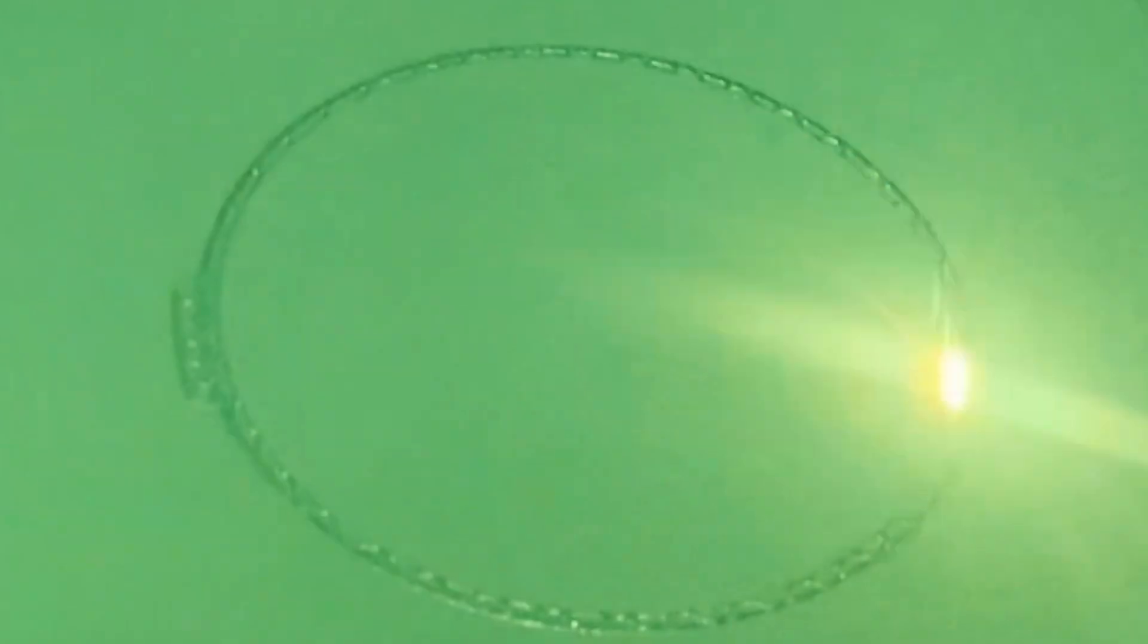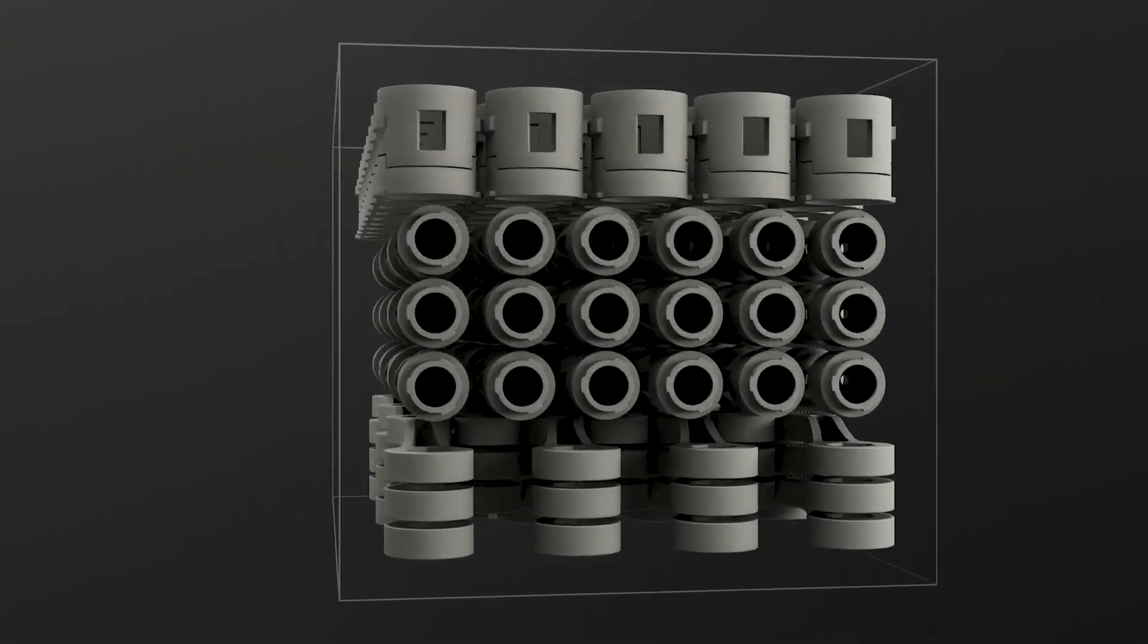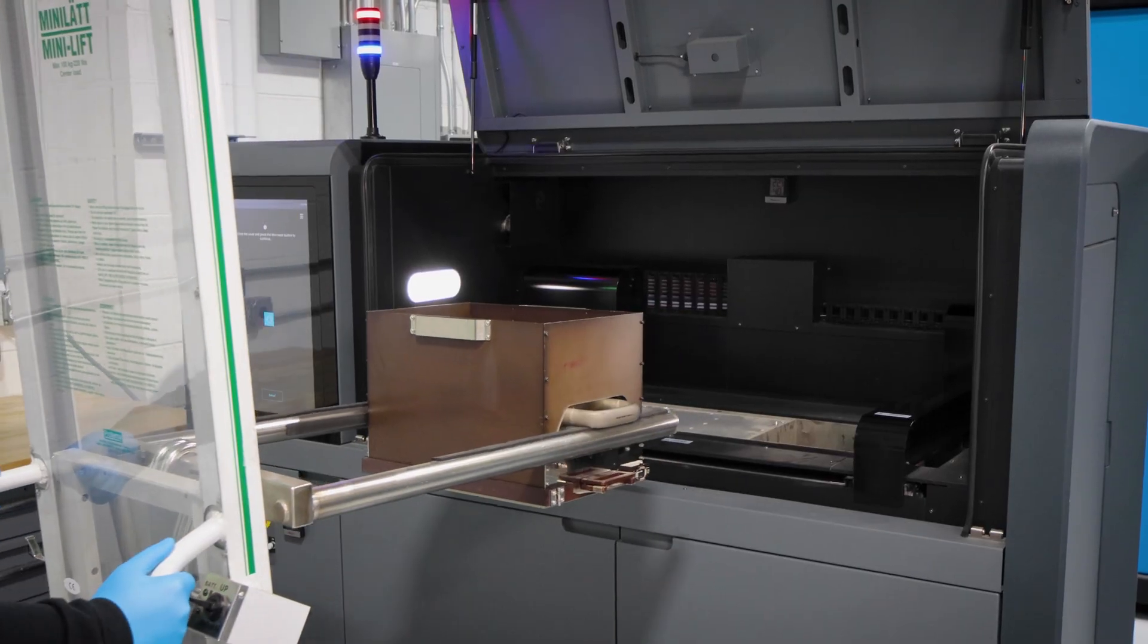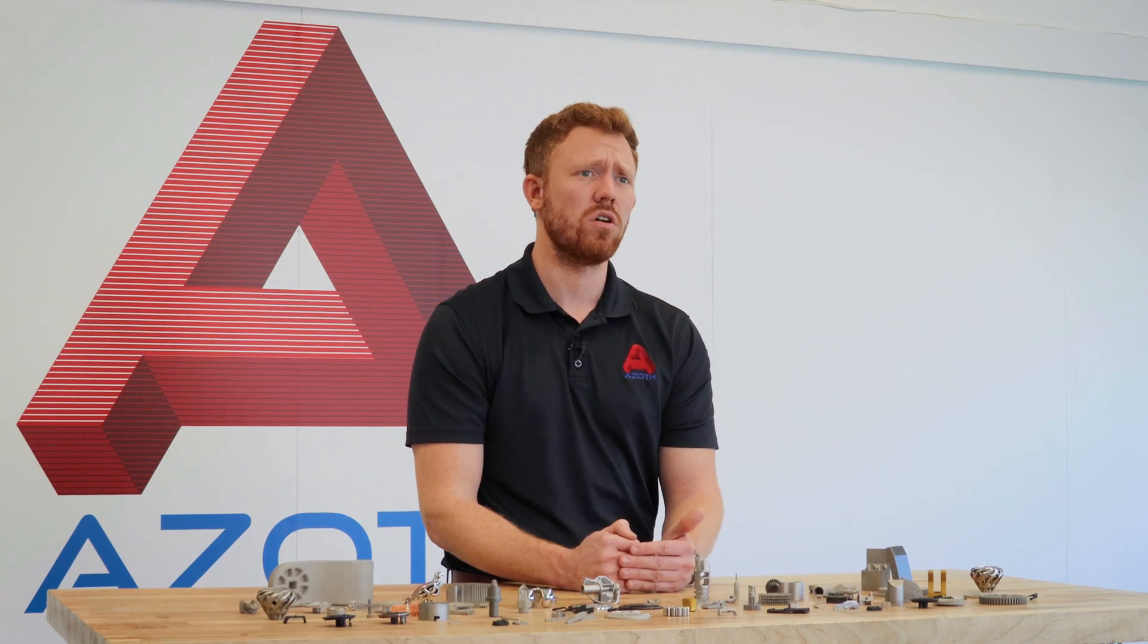But when you start talking about thousands of parts per day, binder jetting is really the only technology that's capable of it. The laser-based systems are still really working on one part at a time where we're filling up large build boxes and turning those over multiple times per day. So you'll see anywhere from a 10 to 100x part cost decrease when switching to binder jetting.